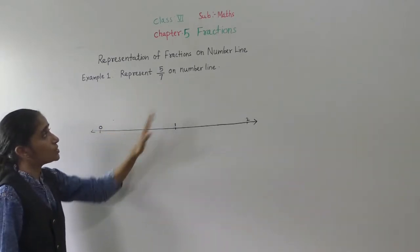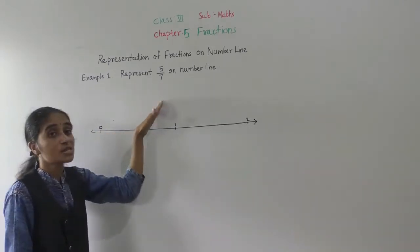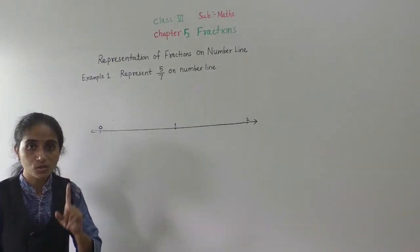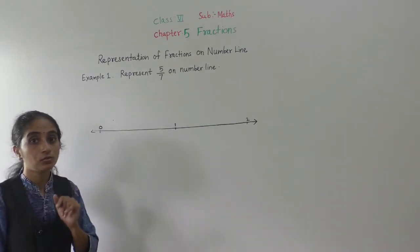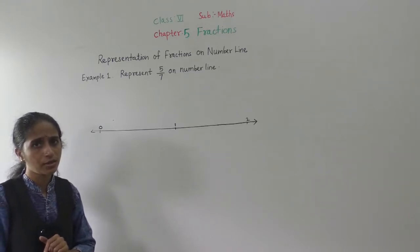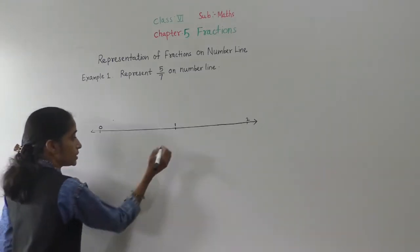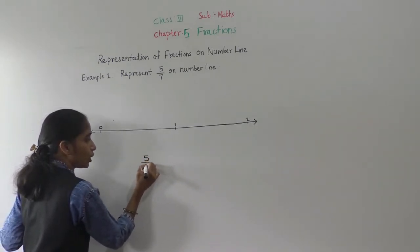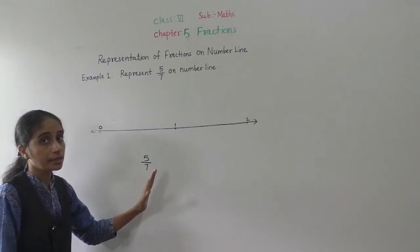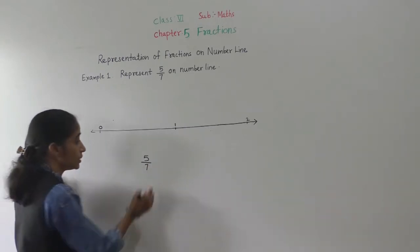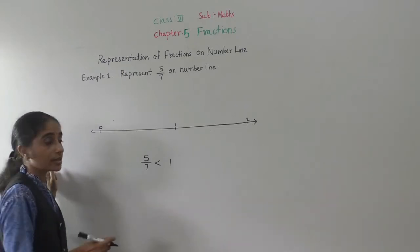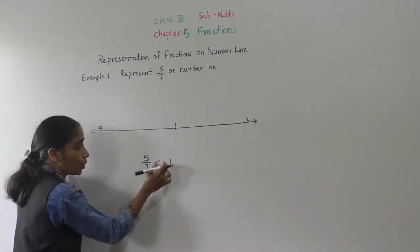Now, represent 5 upon 7 on a number line. 5 upon 7 is smaller than 1. Why smaller than 1? 1 means what? Whole.